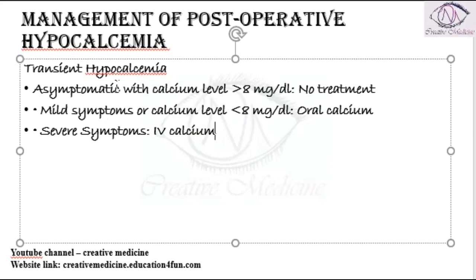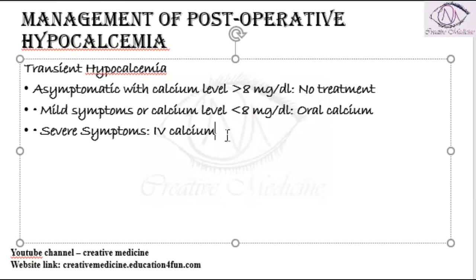If there is transient hypocalcemia, the treatment depends upon whether the patient is symptomatic or not. If the patient is asymptomatic and the calcium level is more than 8 milligrams per deciliter, no treatment is required. If the patient has mild symptoms or the calcium level is less than 8 milligrams per deciliter, we can give oral calcium. If the patient has severe symptoms, IV calcium is required.